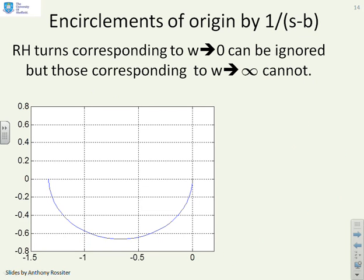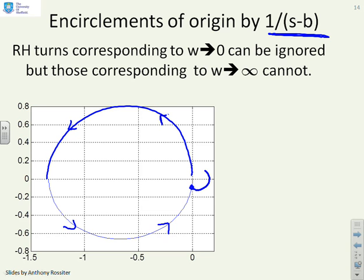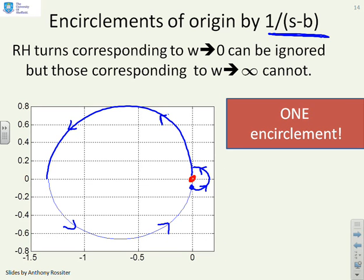Similarly, we could look at factors like 1 over (s minus b). Here's the Nyquist diagram. Drawing the mirror image to complete it, and adding the right-hand turns — this gives you a dimple a bit like this. And what can you see? The origin is inside. So you have one encirclement, and which direction is it? You can see it's anticlockwise.